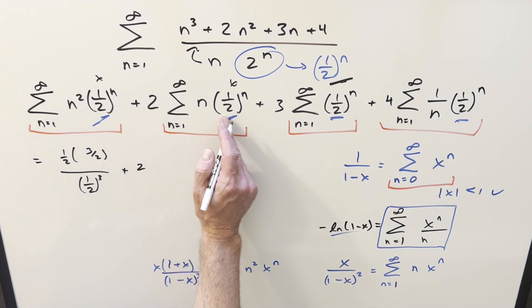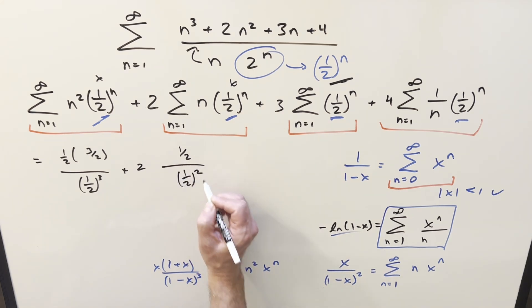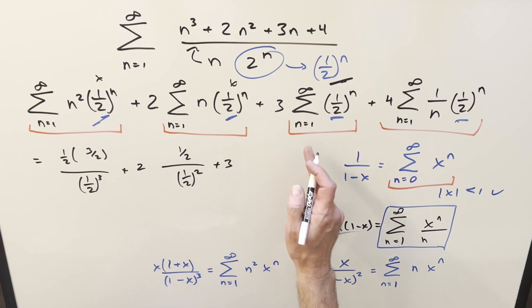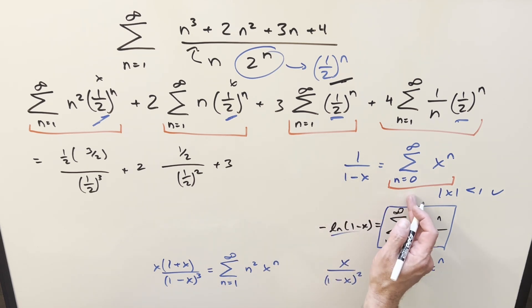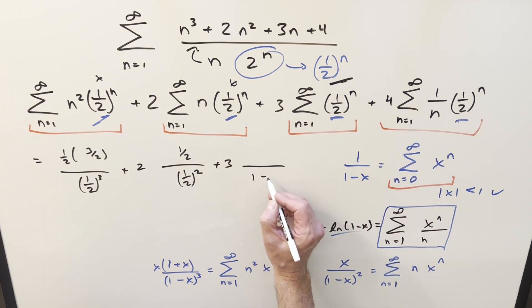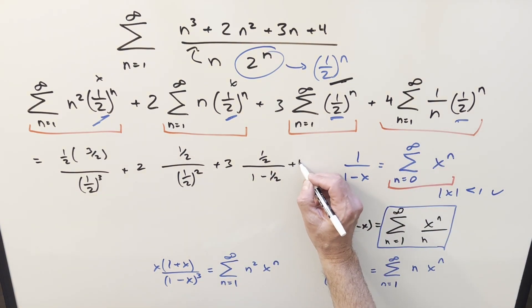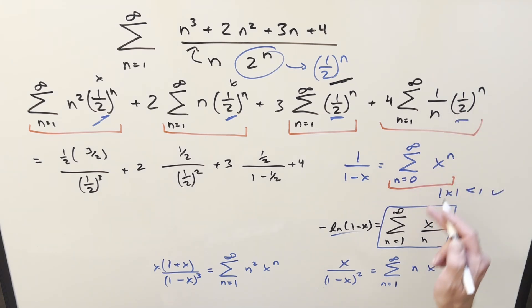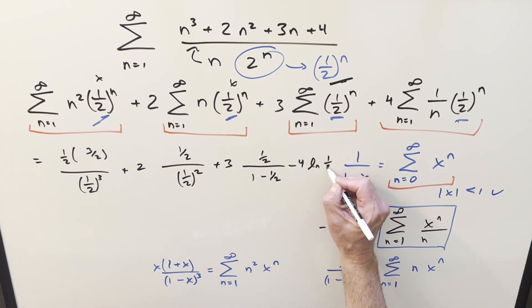On this next one, we have a 2 out front. Use half and plug into this formula. This is going to become 1 half. 1 minus 1 half is going to be 1 half squared. Here we've got the 3 out front. We just have to keep in mind that we're starting here at 1 and our formula starts at 0. But what we can do is just use the geometric series formula, plug in our x, 1 half. But then take the first term. If you plug 1 in here, the first term is 1 half. So we'll just have 1 half in the numerator. And then for this one here, we're going to have 4 out front. Then all this, we determine it's going to be minus ln 1 minus x. So let's change this to a minus sign. And then plug a half in here and we have ln 1 half.